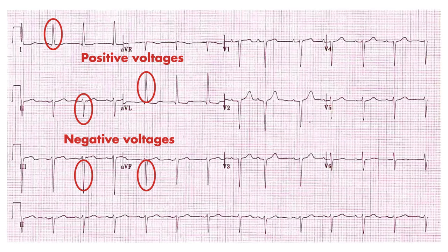Additionally, this electrical conduction takes slightly longer than it does with conduction through both the left anterior and posterior fascicles, which is reflected on the EKG as a slightly widened QRS complex.